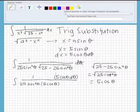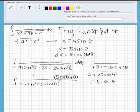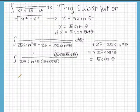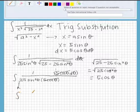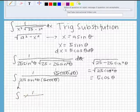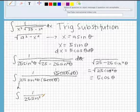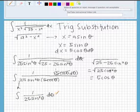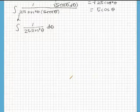So, we cancel these two out and we are left with the integral of 1 over 25 sine squared theta d theta, and then since 1 over 25 is a constant we can pull that out.